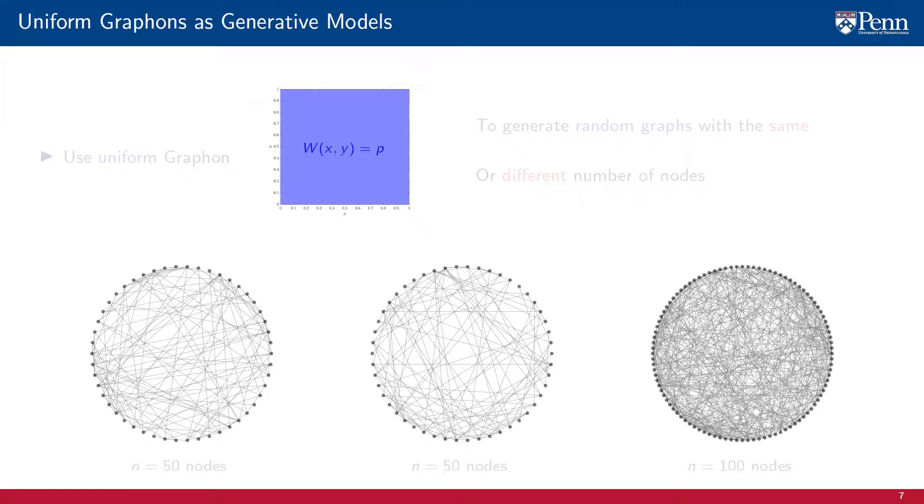As an example of the use of graphons as generative models, consider the uniform graphon. We can use the uniform graphon to generate uniform random graphs with the same or with a different number of nodes. The specific edge structure of the generated graphs differs across instantiations, but they have a shared structure that they receive from the generating graphon.